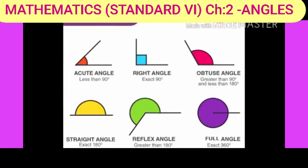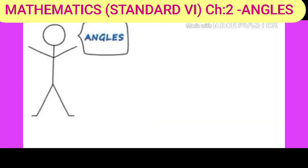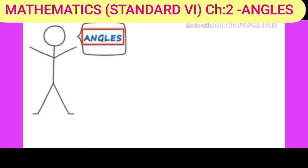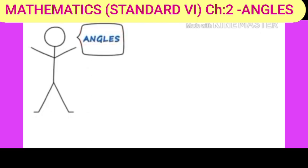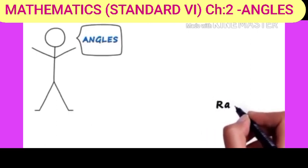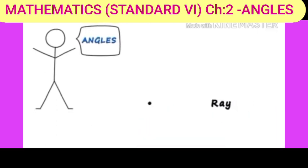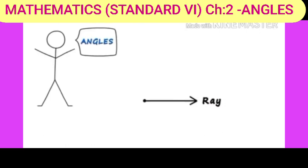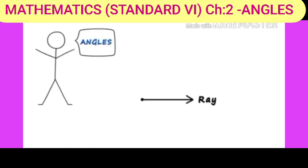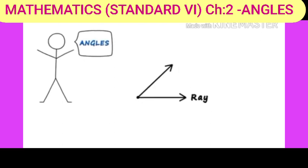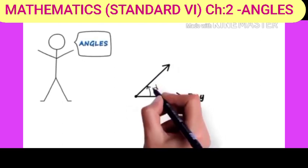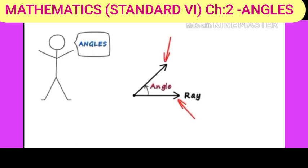Students, you can see these pictures. These all are angles. When two rays are having the same endpoint, it forms an angle. You can see that an angle has two arms and the endpoint is known as vertex. In between, it forms an angle.